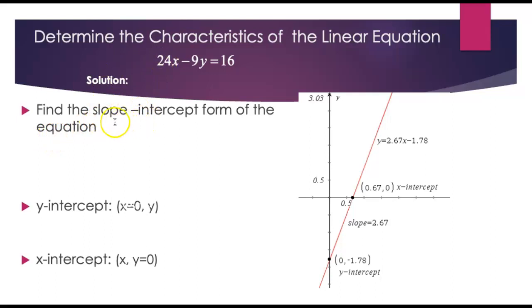So we're going to take this equation that's given and get y by itself on one side. So I need to move that 24x. So my first step looks like this: it's going to be negative 9y, and I'm moving the 24x to the other side. So that's minus 24x plus 16.